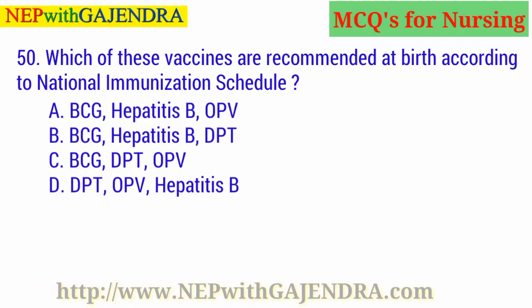Which of these vaccines are recommended at birth according to the national immunization schedule? Option A: BCG, Hepatitis B, OPV. Option B: BCG, Hepatitis B, DPT. Option C: BCG, DPT, OPV. Option D: DPT, OPV, Hepatitis B. The right answer is Option A: BCG, Hepatitis B, OPV.